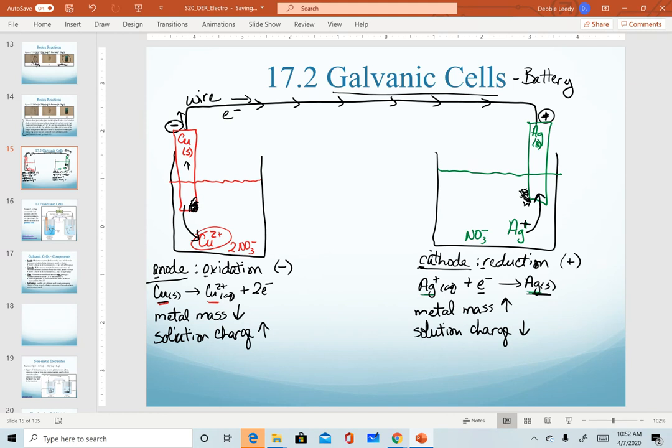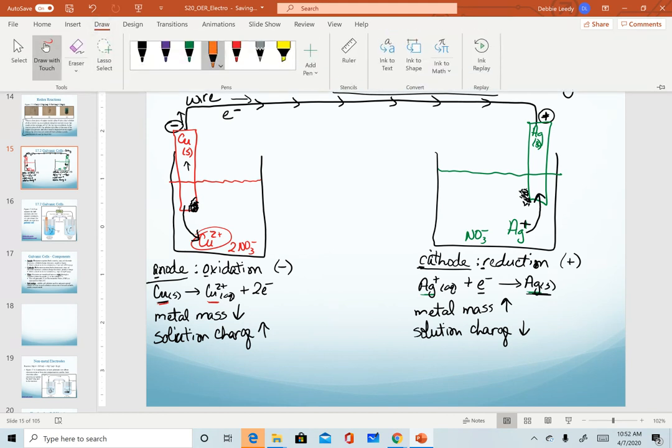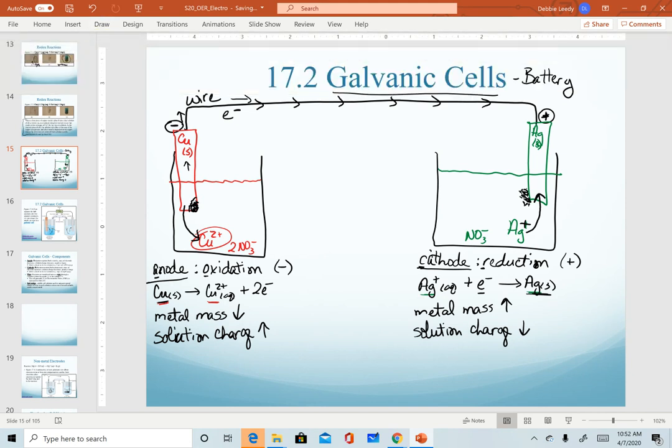Because of the changes in solution charges, we have to add in one more component in a galvanic cell. And this last component is called a salt bridge.